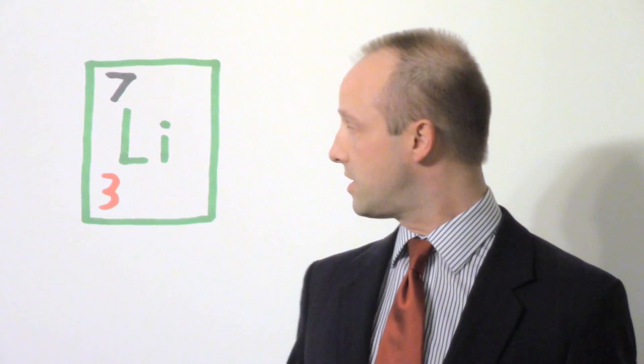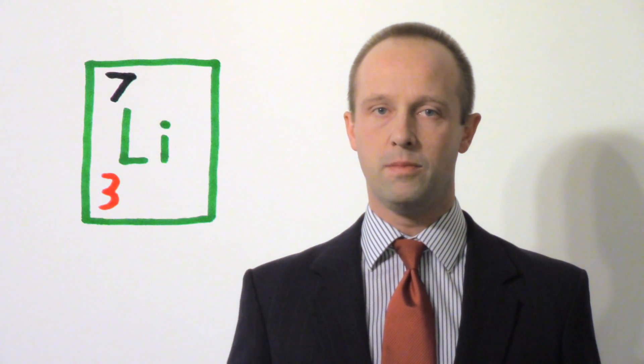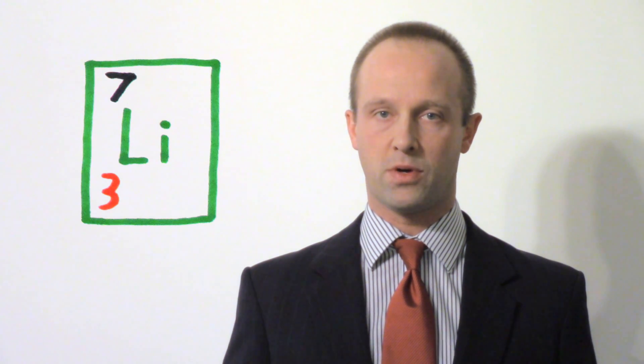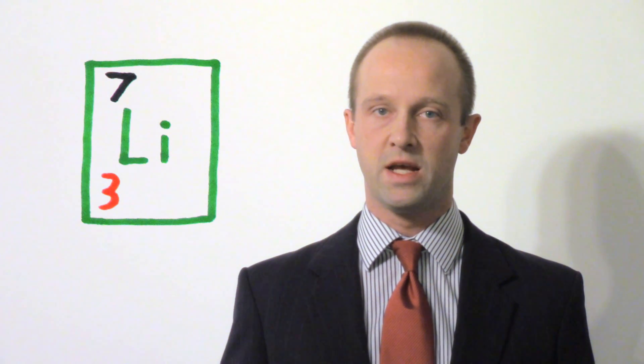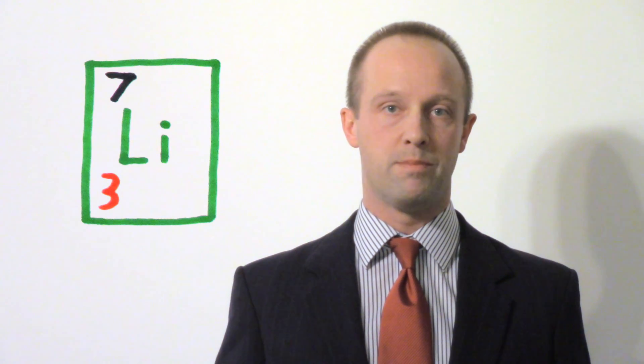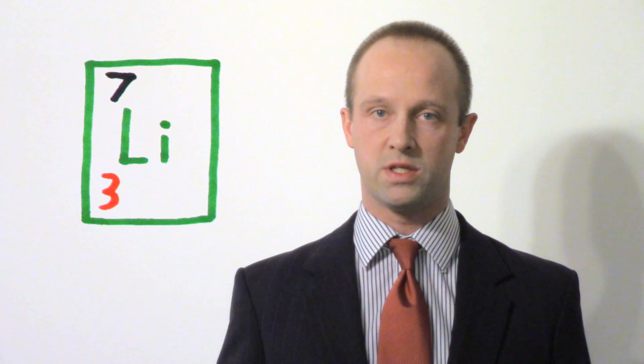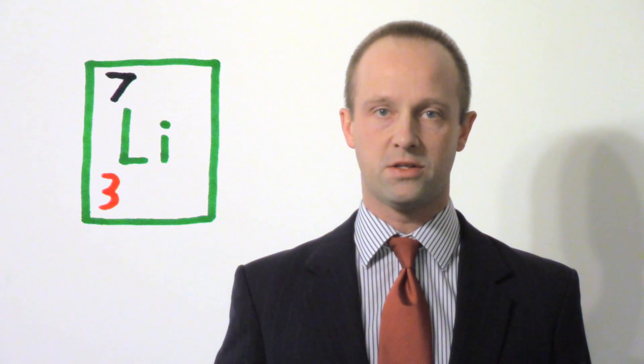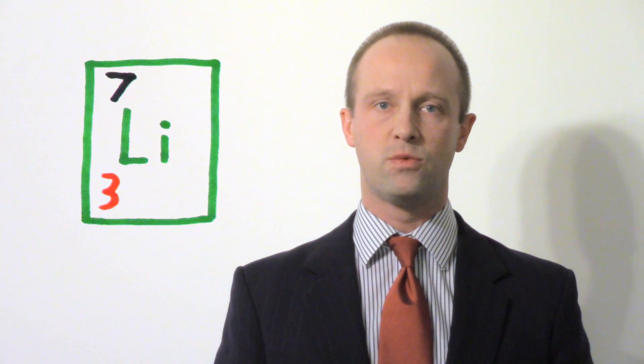In the periodic table, we represent the atoms of each of the elements with an entry like this. The two numbers there give us the information about the protons, neutrons, and electrons in this atom. The small number is always the number of protons. And because the number of protons always equals the number of electrons, it's also the number of electrons. It's often referred to as the atomic number or the proton number.